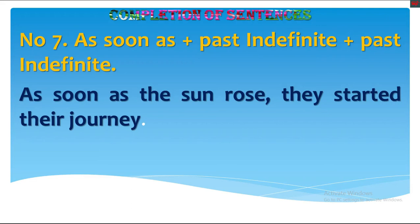Rule number 7: 'As soon as' plus past indefinite is followed by another past indefinite. Example: 'As soon as the sun rose, they started their journey.' A past indefinite has been followed by another past indefinite when the conjunction 'as soon as' is used.